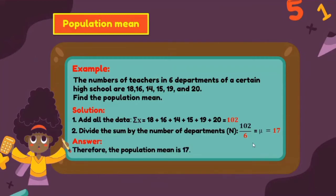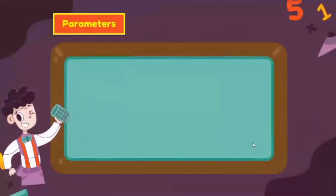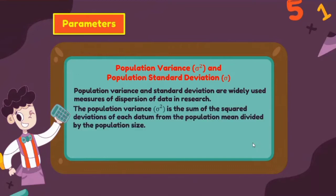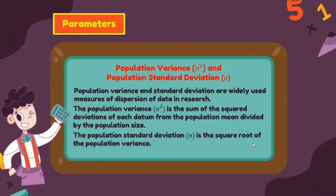Therefore, the population mean μ = 17. Next, we have population variance and population standard deviation. These are widely used measures of dispersion of data in research. The population variance is the sum of the squared deviations of each datum from the population mean, divided by the population size. The population standard deviation is the square root of the population variance.